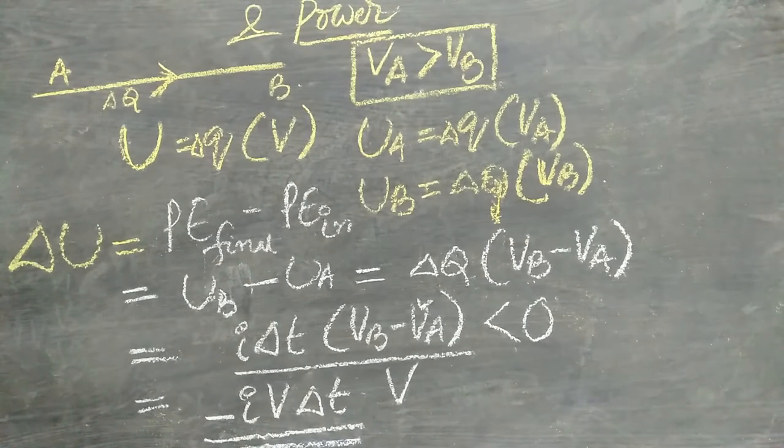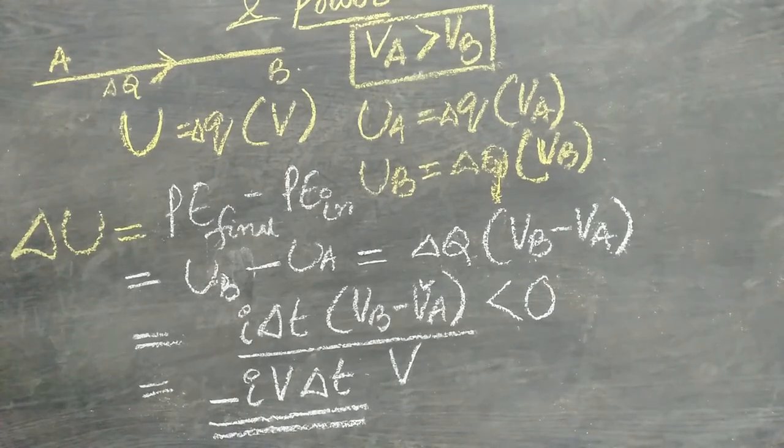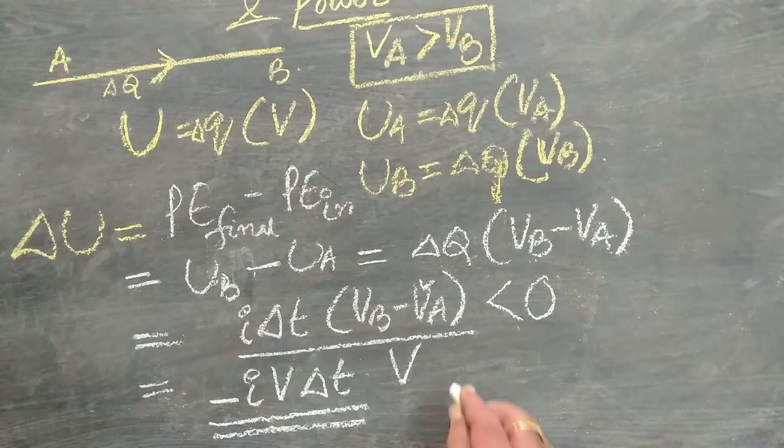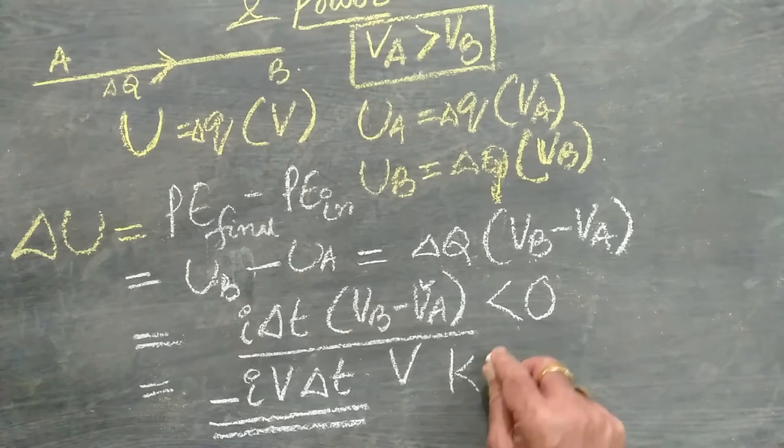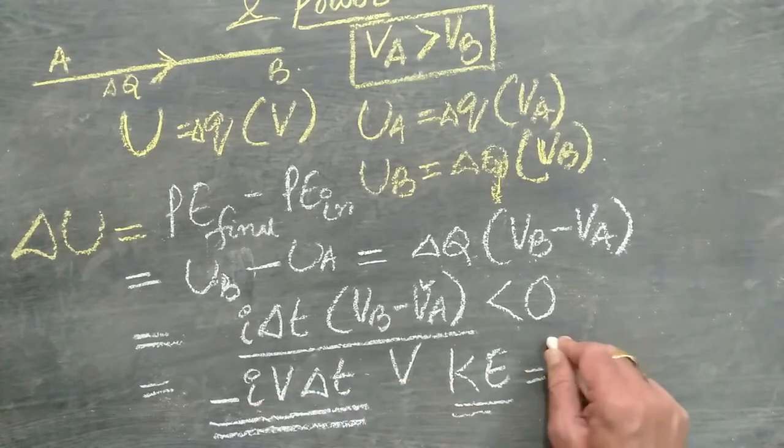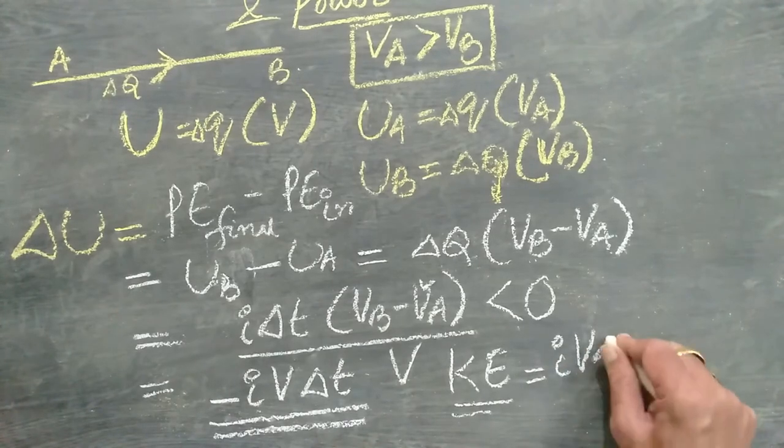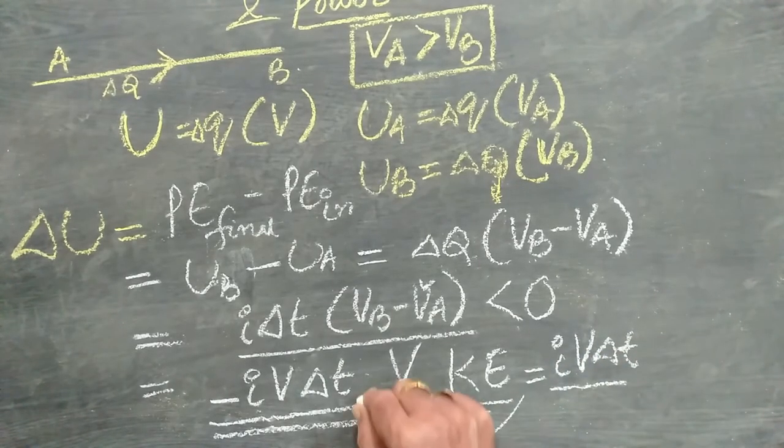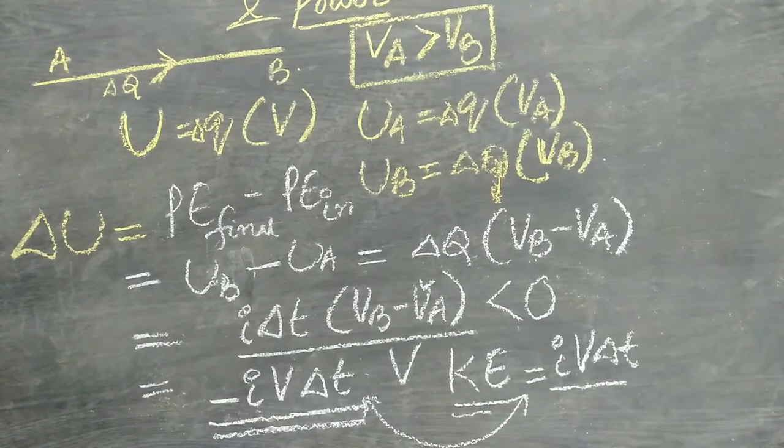Now, according to law of conservation of energy, initially, if you take that the electron or any particle or charged particle is at rest, then total initial energy of that particle is 0. Therefore, I can write immediately, the value of kinetic energy is same but with positive. So that when I add these two, I must get 0. I hope you understand this logic.